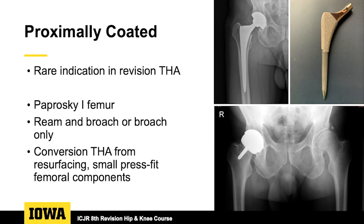Most people would use ream and broach. It's a rare indication for revision total hip. This goes back to the Paprosky type 1 femur where you can really rely on — after getting the femoral component out — having enough bone proximally to ingrow with this stem design. In my practice, uses include conversion total hips from resurfacing.